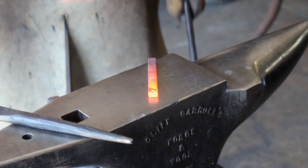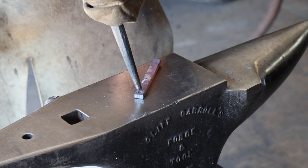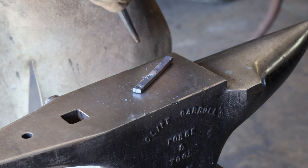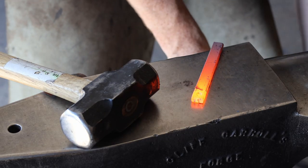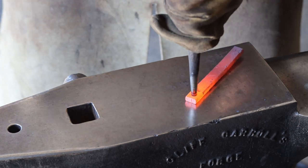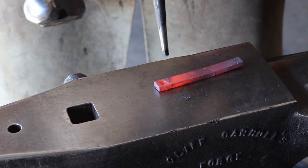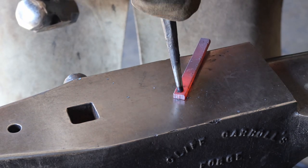So I'm going to start this off with my ball end punch. All right, now that I've got the hole started, I'm going to switch to my regular punch, flat tip round punch. I'm going to cool this off every blow or two.